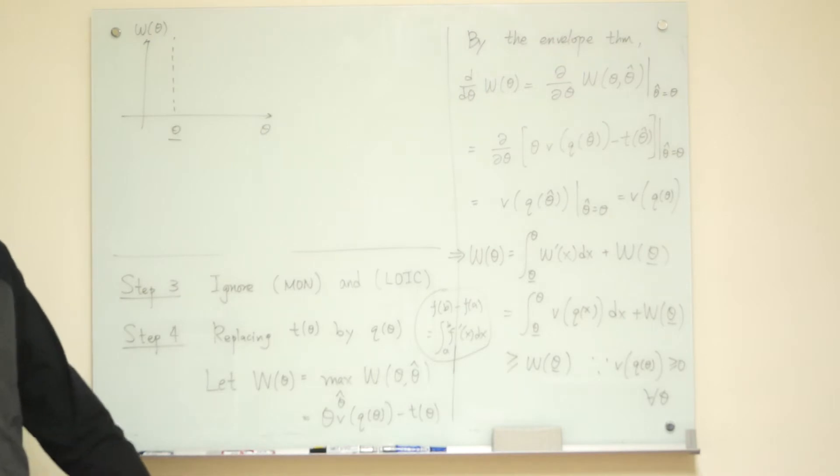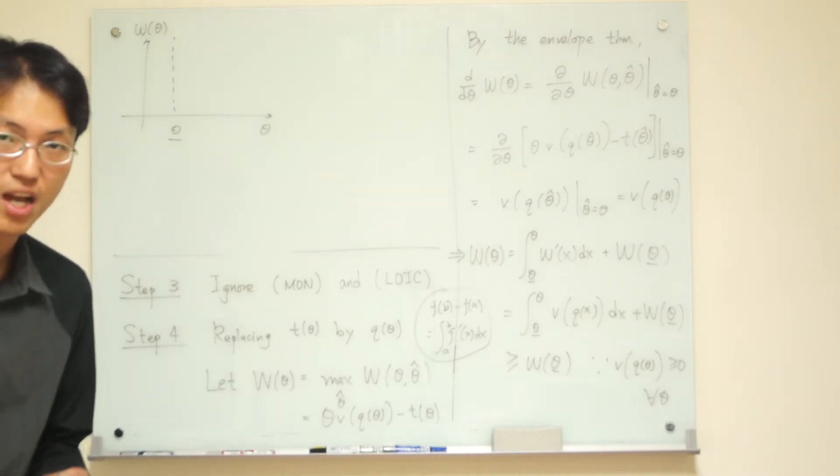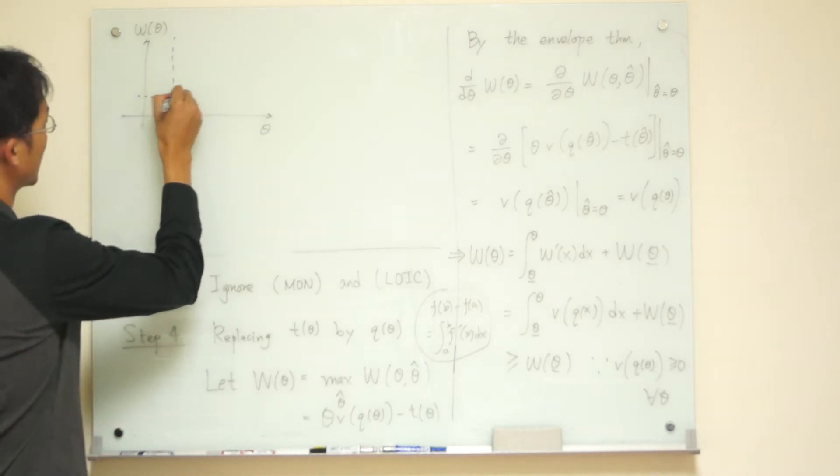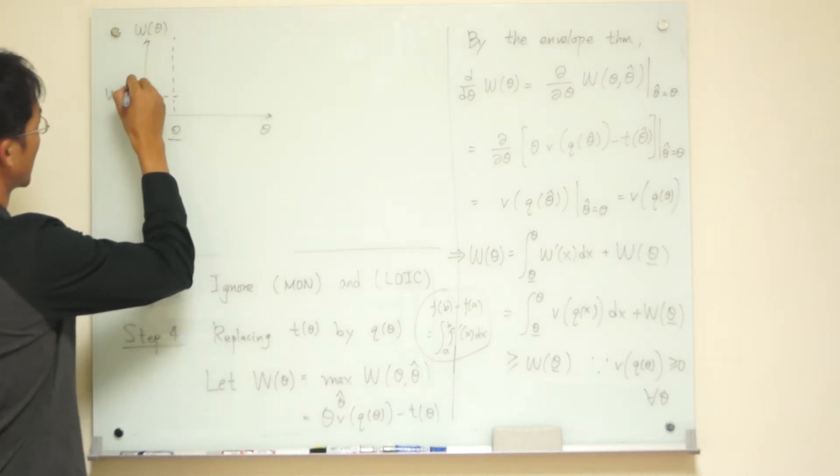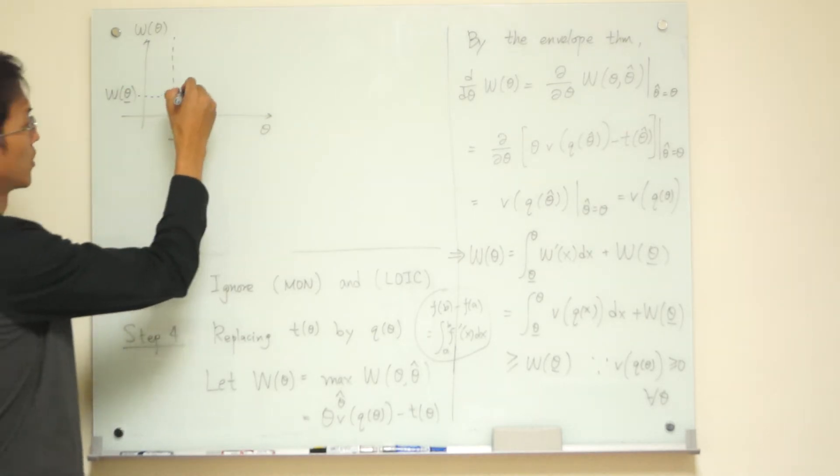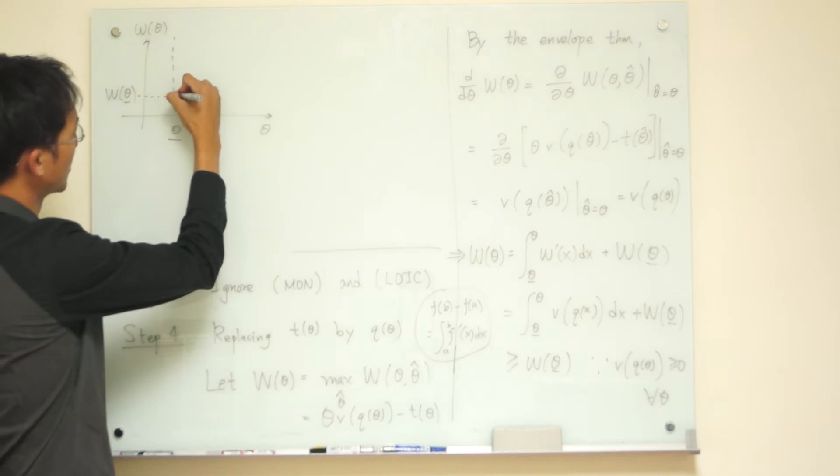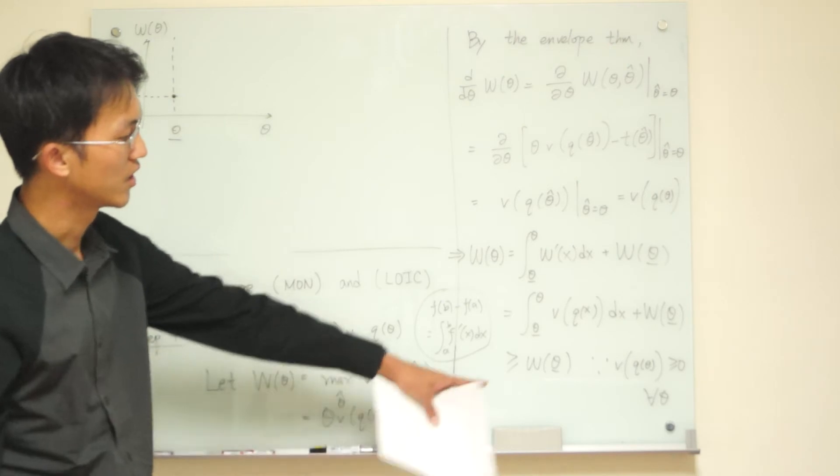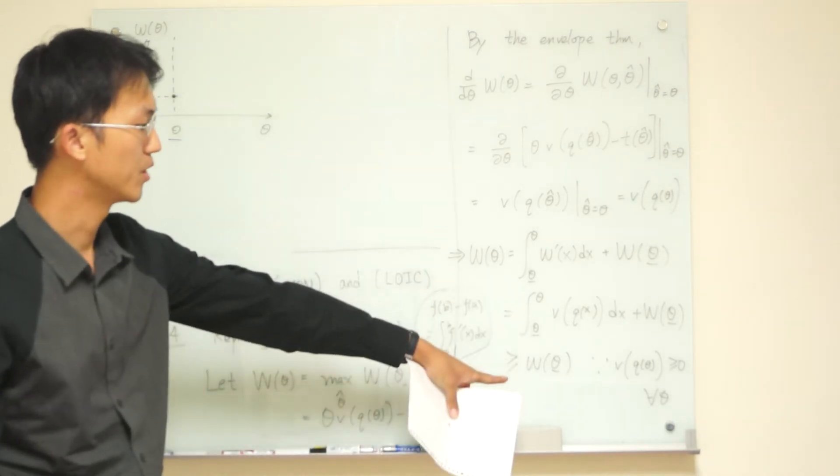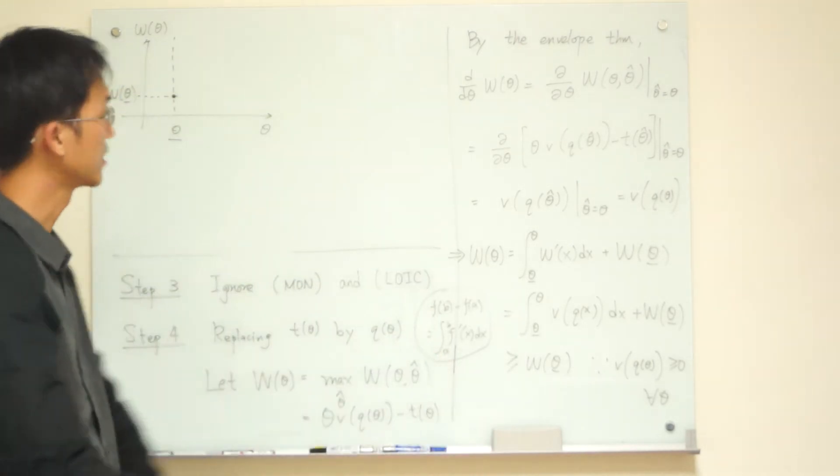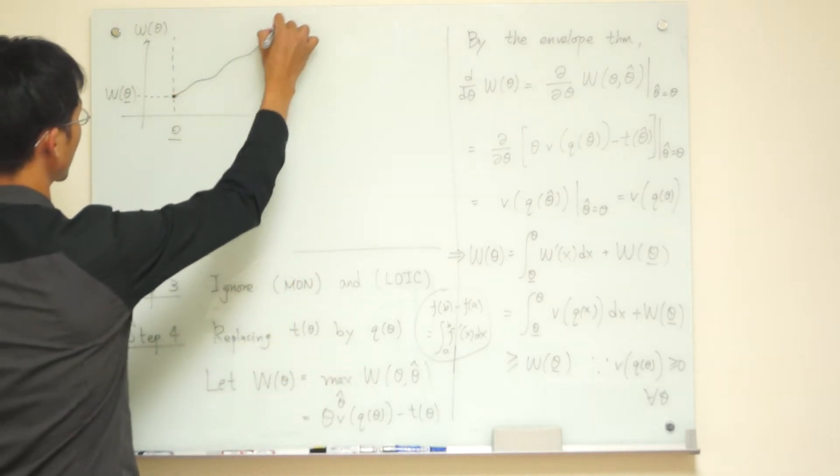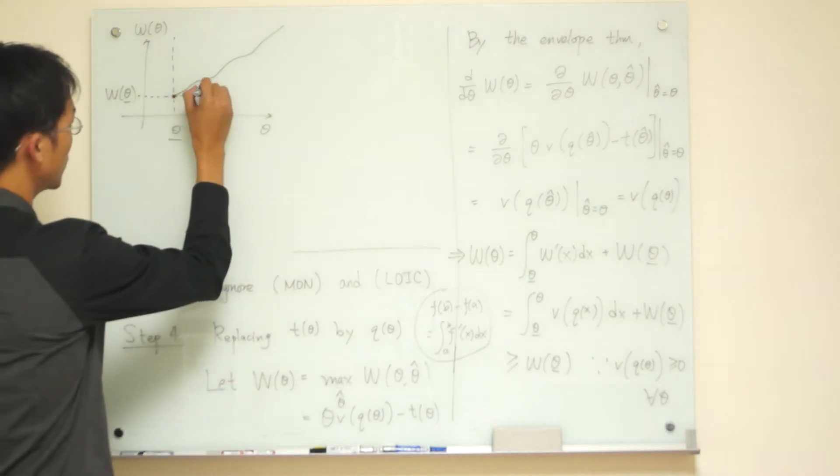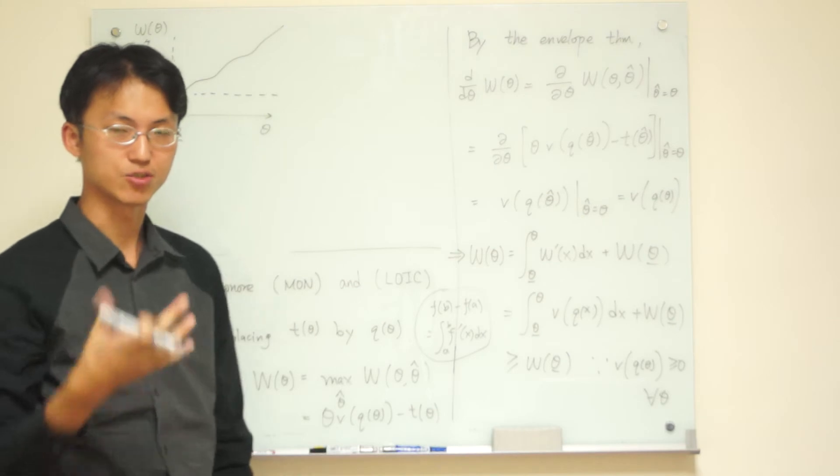Okay. Suppose, for some contract you decide, the lowest type gets something here. Okay? The lowest types payoff. Equilibrium payoff. Then, we're saying that when your type becomes larger, you're going to earn more. Right? And, eventually, W of theta must be increasing. Right? So, it will be some function like this. Okay? And, how does this tell you?